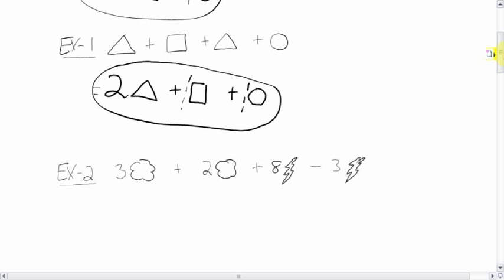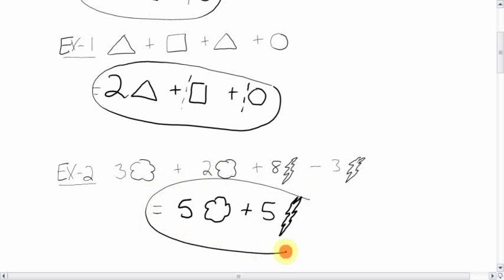Something a little different. Here's one where it's a little more clustered. Three cloud plus two cloud plus eight lightning bolt minus three lightning bolt. What are the like terms here? Obviously clouds are like each other, so we can add them or collect them. Three cloud plus two clouds is five clouds. Eight lightning minus three lightning is five lightning. It's positive five lightning, so you put plus five lightning bolt. That's as far as we can go because you can't add clouds and lightning.